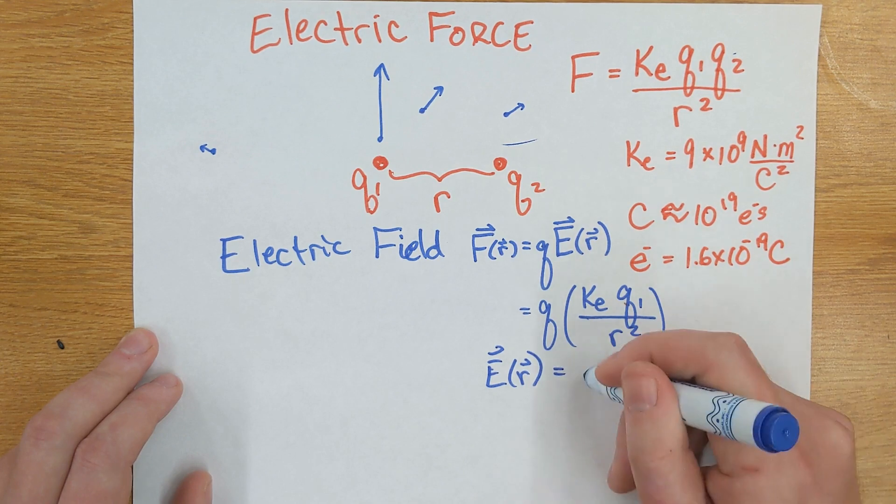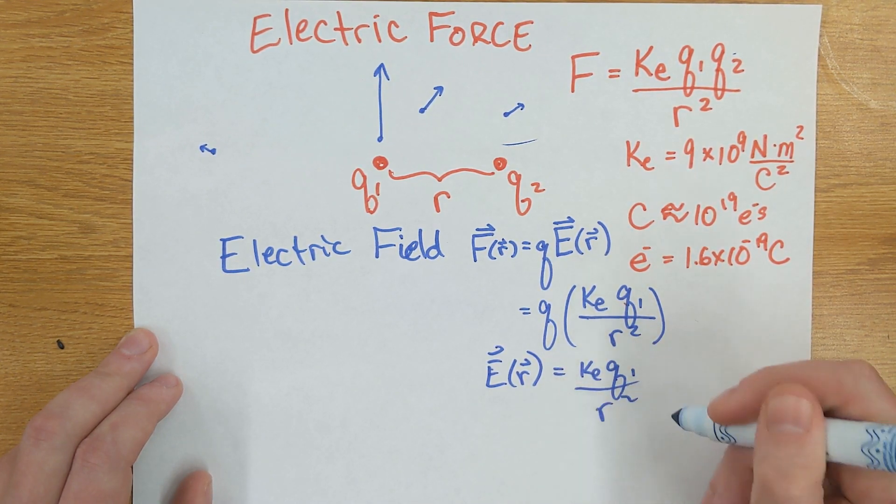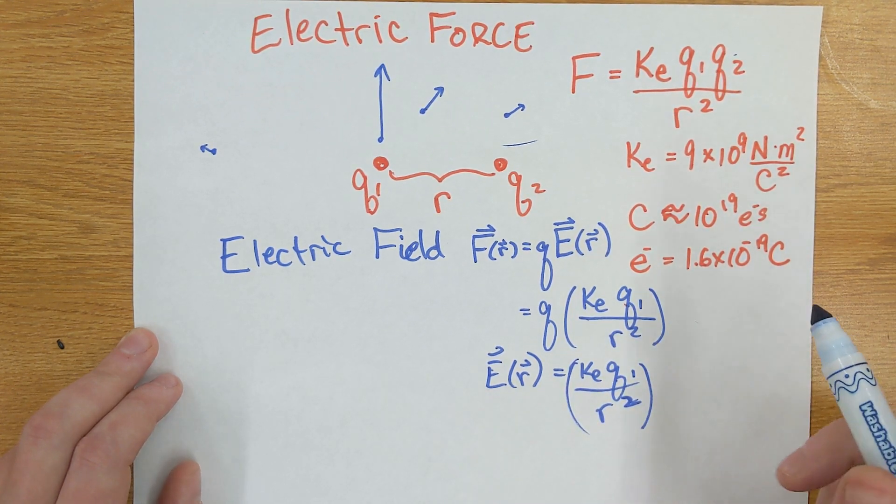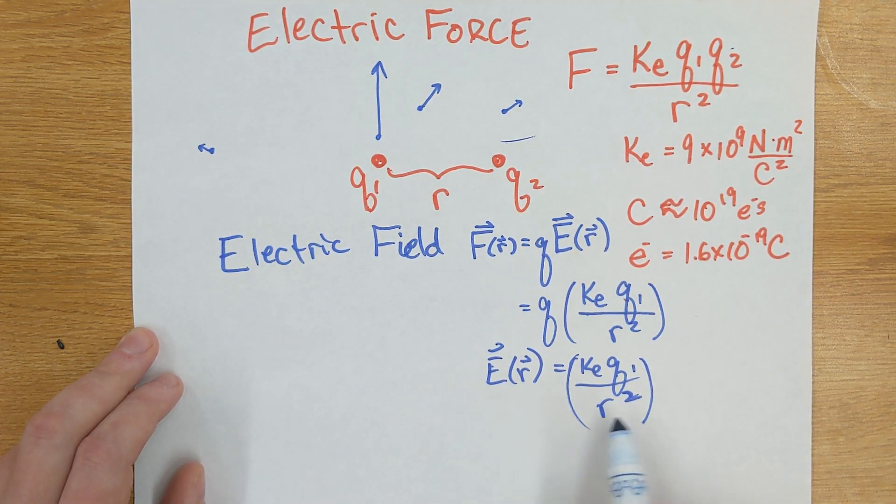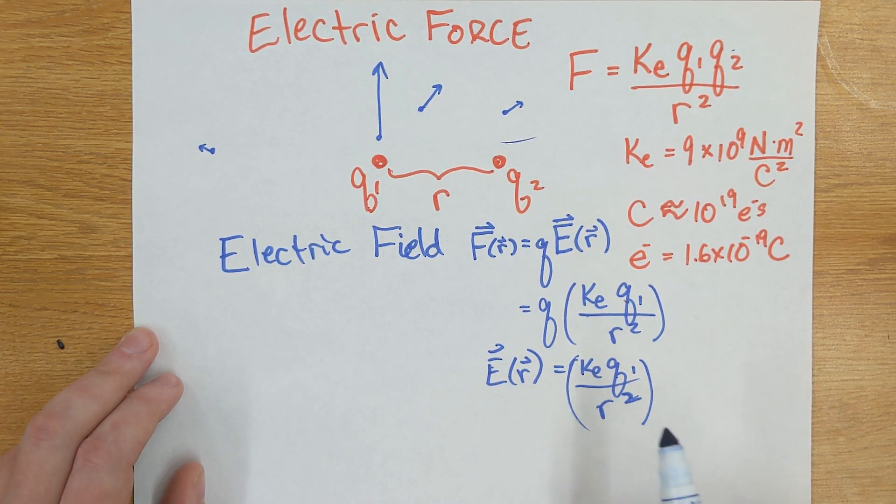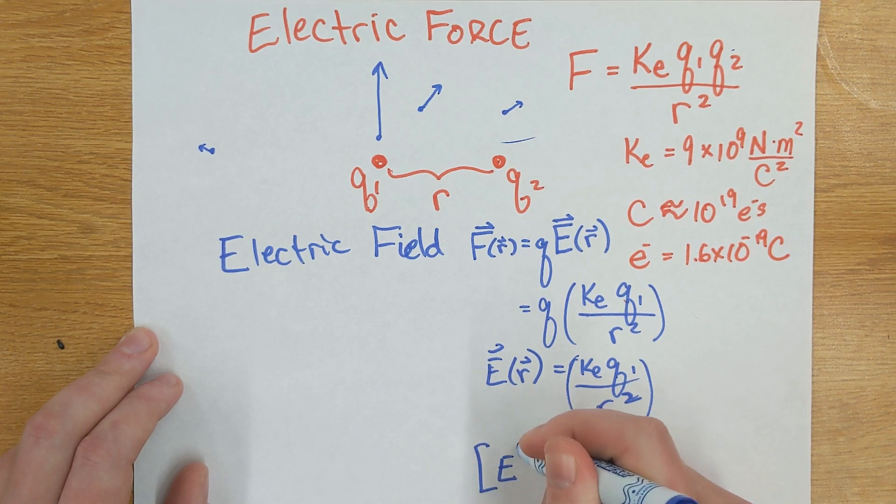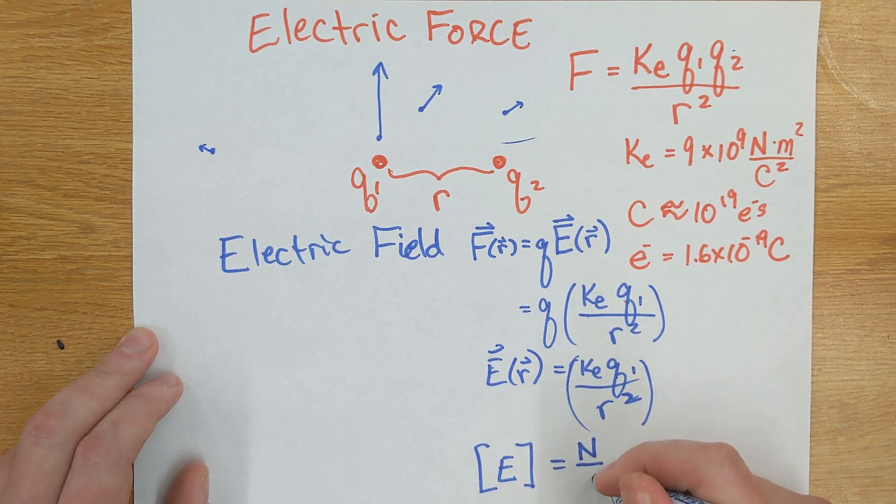This is useful because it lets us know what the force would be due to the first charge, even if the second charge weren't there. But if there were a charge there, what would the force be? It's important to know there's only a force if there's a second charge. But this function lets us know what the force would be at every point in space if there were a charge there. Because of that, the units of electric field are the force per charge, so newtons per coulomb.